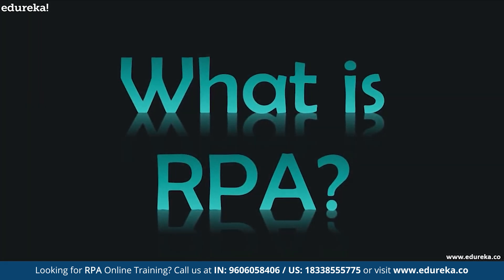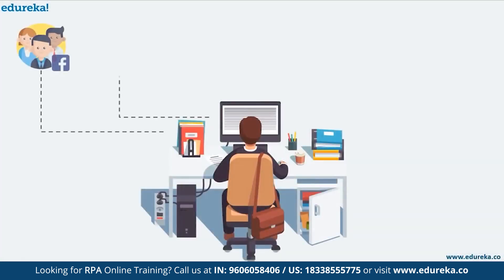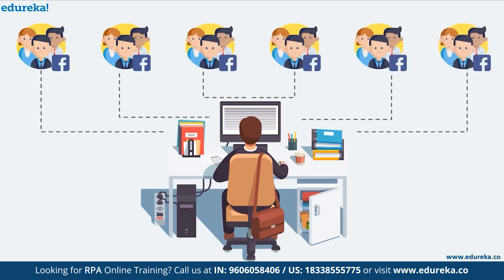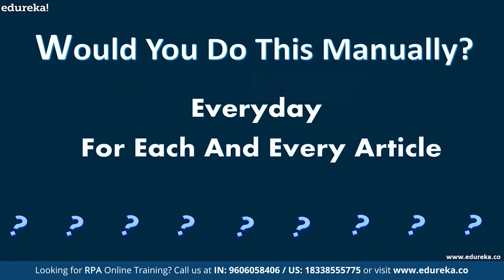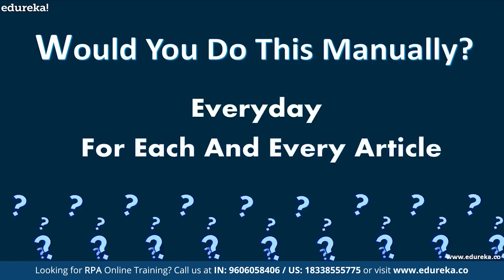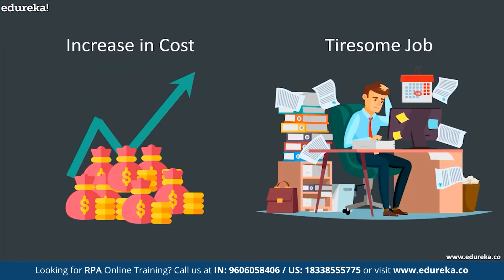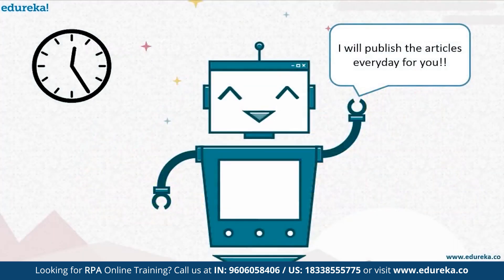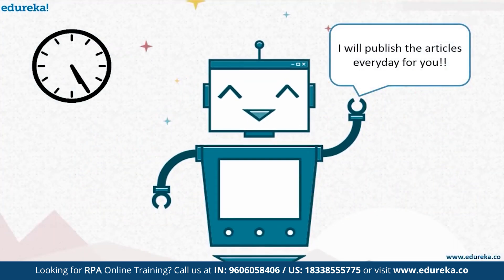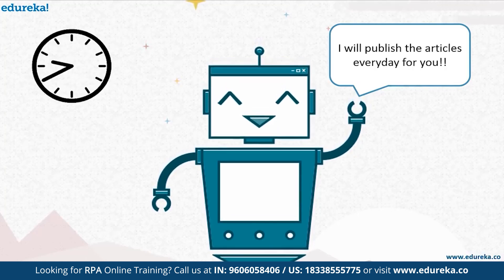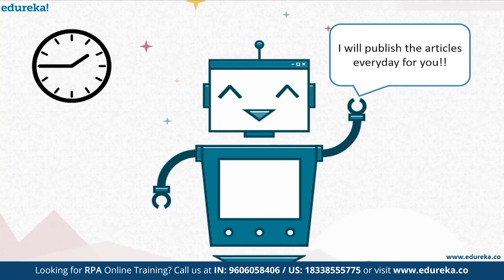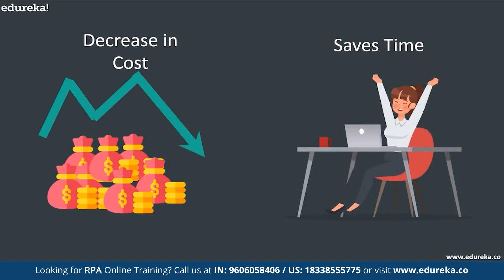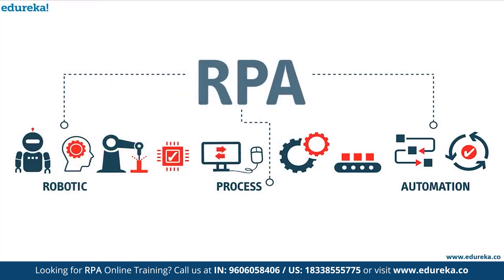To understand what RPA is, consider an instance where you want to publish your articles on various social groups at a specific time every day. Doing it manually every day for each article would cost you a lot and be tiresome. Instead, you could configure a computer software or a robot to interpret human actions and imitate them — for example, to publish articles every day at the mentioned time. That would not only cost you less but also be less tiresome. So robotic process automation is the process of automating tasks or processes with the help of robots or software to reduce human intervention.